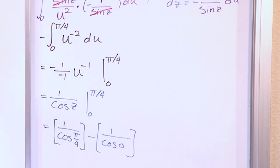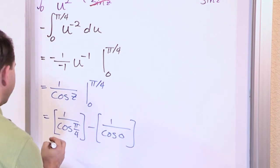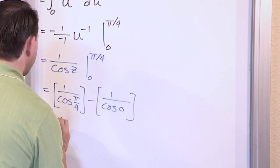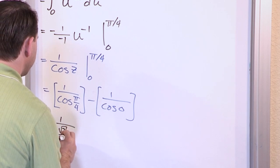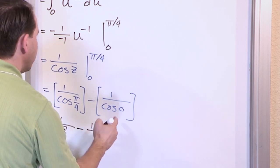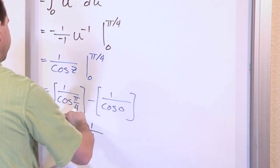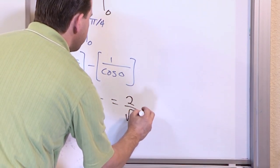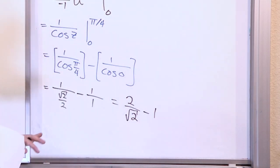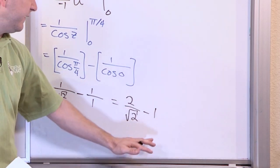Plugging in the upper limit: 1 over cosine of pi over 4 equals 1 over (square root of 2 over 2). Plugging in the lower limit: 1 over cosine of 0 equals 1 over 1, which is 1. Flipping, 1 over (root 2 over 2) gives 2 over the square root of 2, minus 1. This is a perfectly fine answer to give on a test.